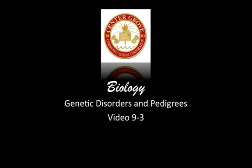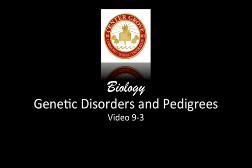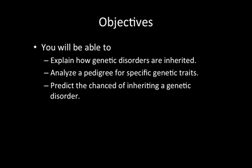Hey folks, welcome back. Today we have finished up our work on Punnett squares, and we've done a lot of practice with them. What we get to look at now are genetic disorders and pedigrees — what are some traits we can inherit that cause problems inside the body, and what are some genetic disorders we can inherit? We're also going to look at pedigrees, which show how a trait has been passed on over many generations, helping us determine what types of traits these genetic disorders are and how they get passed on or even skip generations. Hopefully today you'll be able to explain how genetic disorders are inherited, analyze a pedigree for specific genetic traits, and predict the chances of inheriting a genetic disorder.